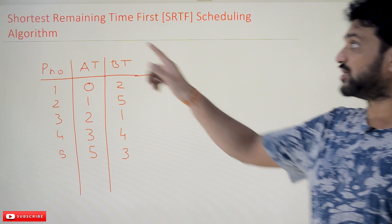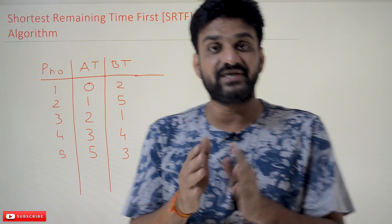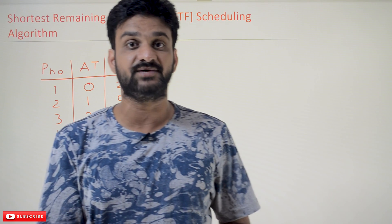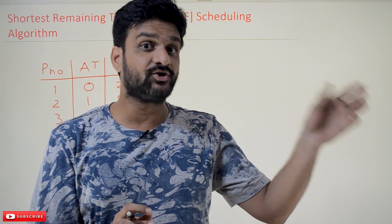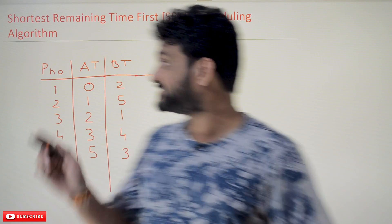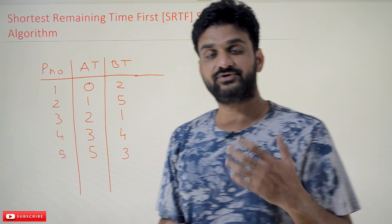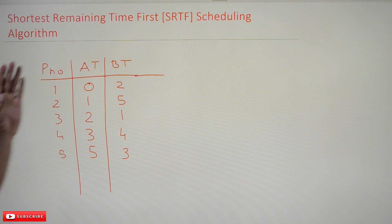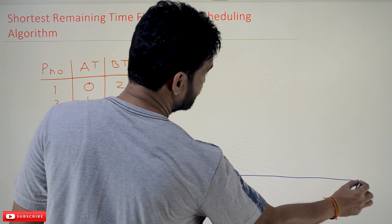Now let's try to understand the Shortest Remaining Time First (SRTF) scheduling algorithm. This algorithm is the same as Shortest Job First, which we discussed in our previous video. The difference is that SJF is a non-preemptive scheduling algorithm, but SRTF is a preemptive scheduling algorithm. Let's understand this using an example — the same example we used for FCFS and SJF.